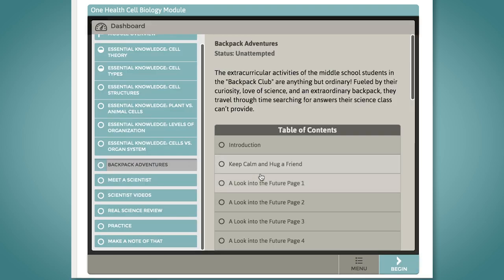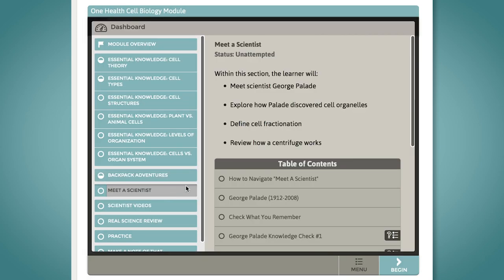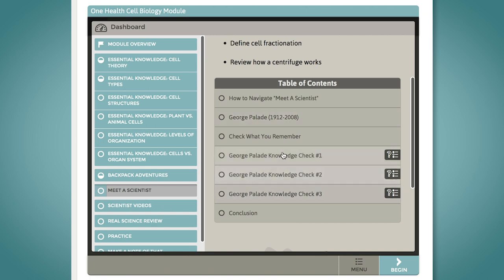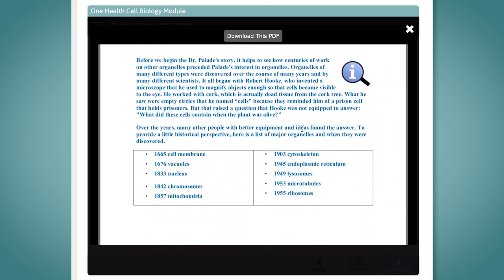From fictional stories based on factual key moments and people in science, to level-appropriate science journal articles and interactive games, the design of the One Health curriculum encourages discovery and takes a flexible approach to learning by allowing students to choose when and how they will navigate the content.